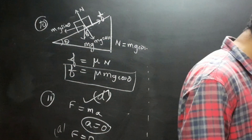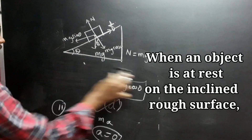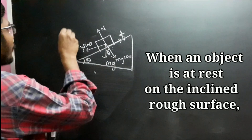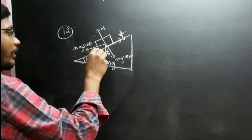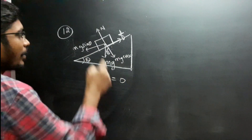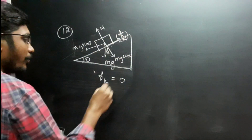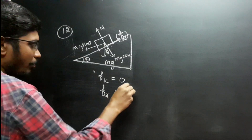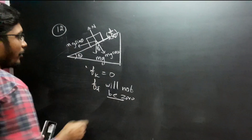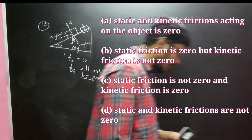Question 12: Static and kinetic friction — when the object is at rest, kinetic friction value is zero. When the object moves, static friction plays a role and will not be zero, whereas kinetic friction applies during motion. For the block on inclined plane, the answer is option C.